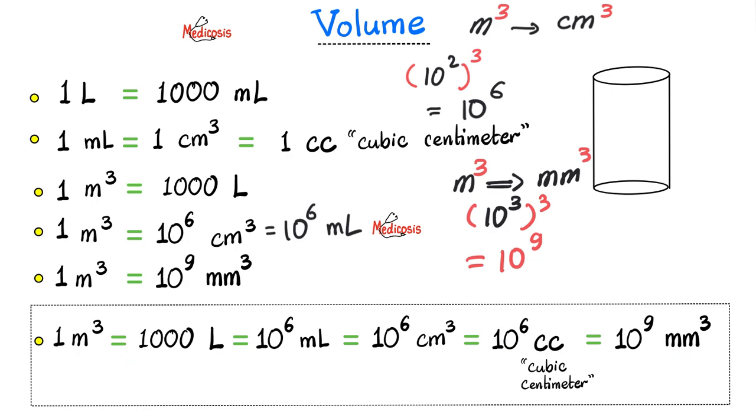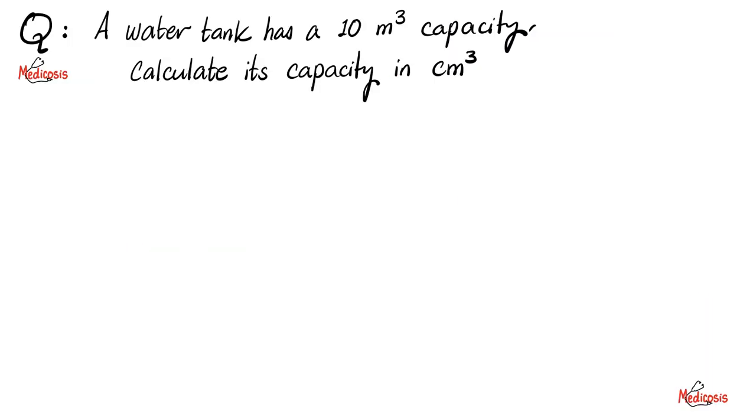Let's put it all in one sentence. One cubic meter equals 1,000 liters, which equals a million milliliters, which equals a million cubic centimeters. Because 1 ml is the same as 1 cubic centimeter. So these numbers have to be equal. And you can write cubic centimeter this way or this way. And we established that 1 cubic meter equals a billion cubic millimeters.